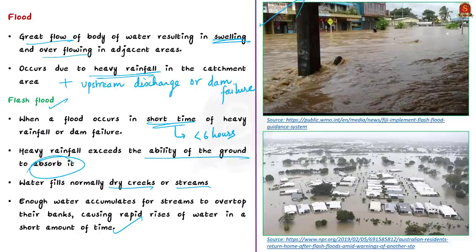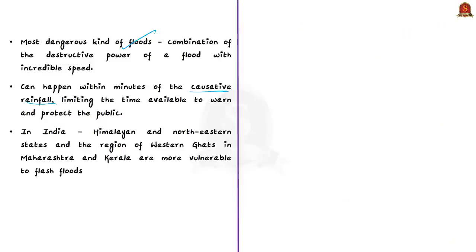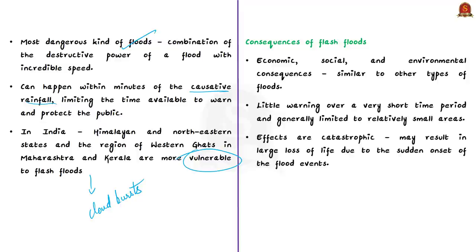In India, Himalayan and northeastern states, and the region of the Western Ghats in Maharashtra and Kerala, are more vulnerable to flash floods caused by cloud bursts. The economic, social, and environmental effects of flash floods are similar to other river floods, but the major difference is they generally occur with little warning over a very short time and are limited to relatively small areas. However, the effects are catastrophic and may result in large loss of life because of the sudden onset.